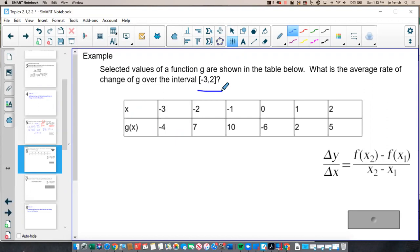I need to see that at 2, when x is 2, my y value is 5, or my g value. At negative 3, my g value is negative 4. So now I have my points, and I can use my average rate of change formula.